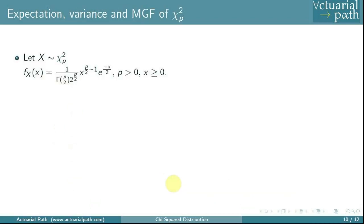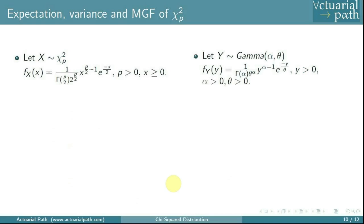The chi-squared distribution PDF is very similar to the gamma distribution PDF. Recall that when y follows a gamma distribution with parameters alpha and theta, its PDF is [1 / (gamma(alpha) * theta^alpha)] * y^(alpha-1) * e^(-y/theta) for y > 0. When alpha = p/2 and theta = 2, the gamma PDF is exactly the chi-squared PDF. Therefore, the chi-squared distribution with p degrees of freedom is equal in distribution to the gamma distribution with alpha = p/2 and theta = 2.